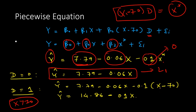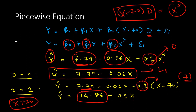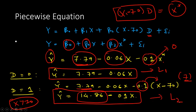When D = 1, meaning x is greater than 70, we substitute x* = (x − 70) into the main equation. Expanding: −0.1 multiplied by x gives −0.1x, and −0.1 multiplied by −70 gives +7. So 7 gets added to 7.79, giving a new intercept of 14.86. The slope coefficient is −0.1. Therefore, the second equation L2 is ŷ = 14.86 − 0.1x.